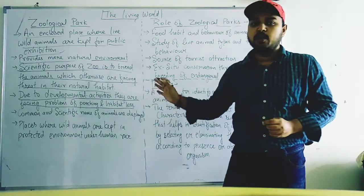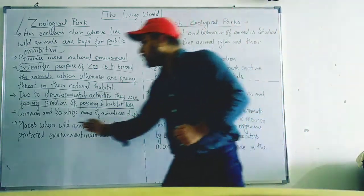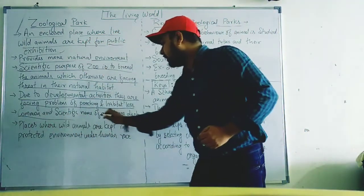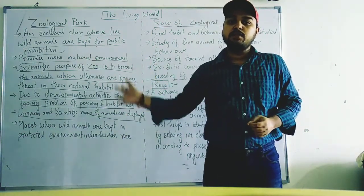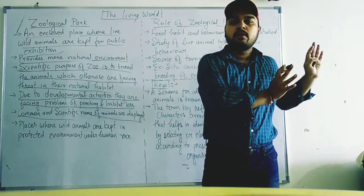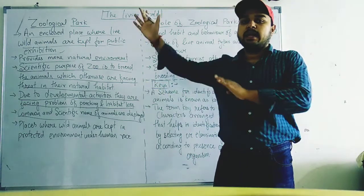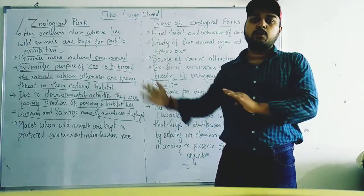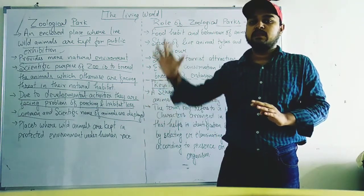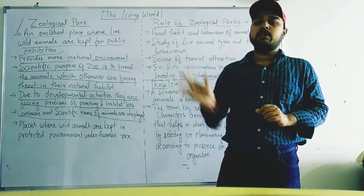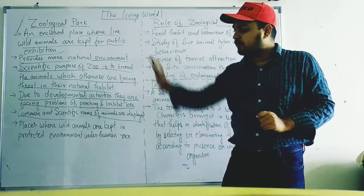These activities are happening which are not right; they should be banned and prohibited. Also, the common and scientific names of animals are displayed in the zoo. Just like in a museum there is a catalog, here in the zoo there is a board with descriptive information about each animal — its scientific name, common name, feed, and all related information.